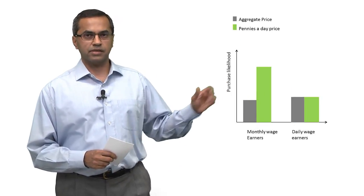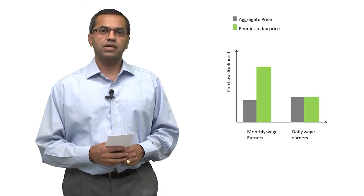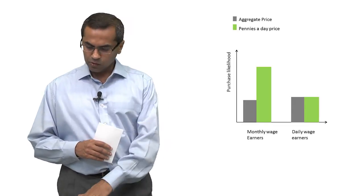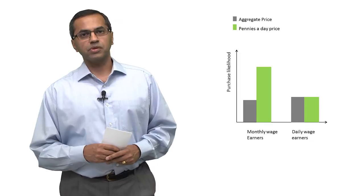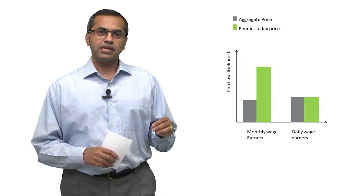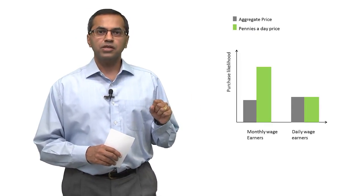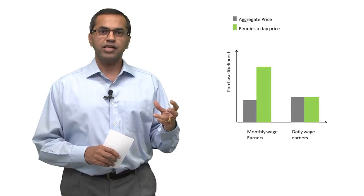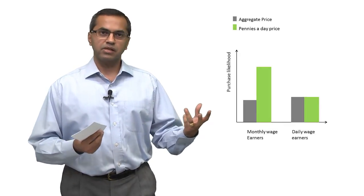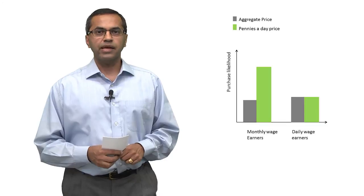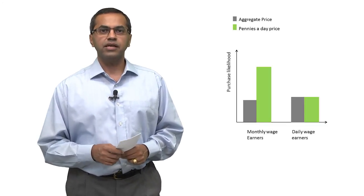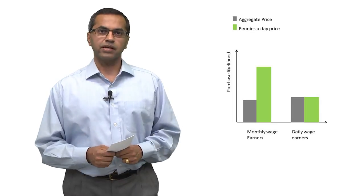Here's a third kind. Let's imagine that this experiment was done not so much with amounts, but with two different kinds of people. For example, let's say in one condition, we showed people who were monthly wage earners and put them in two conditions, the aggregate versus pennies-a-day. In a second group, we took people who were daily wage earners and then again did the same thing all over again with them.